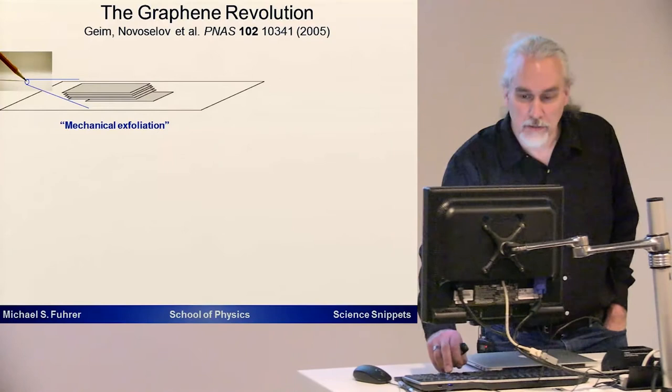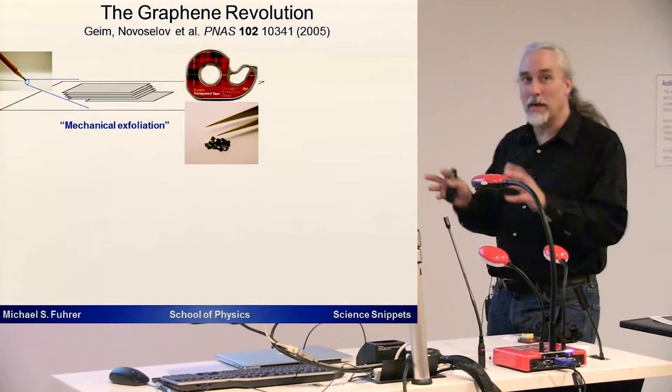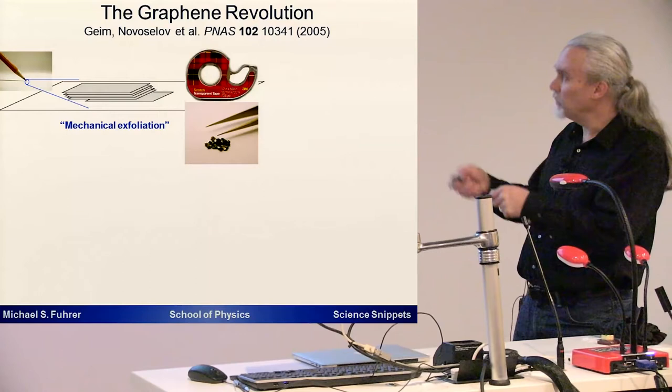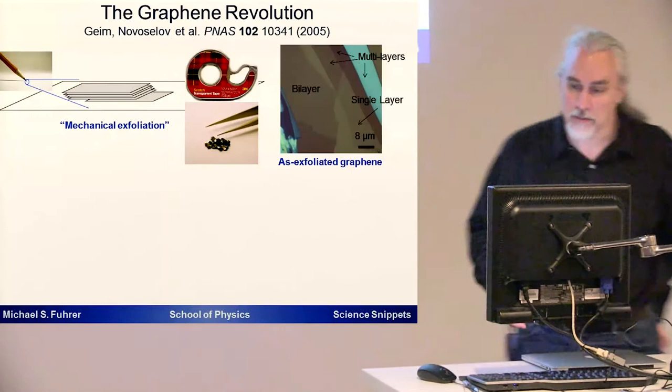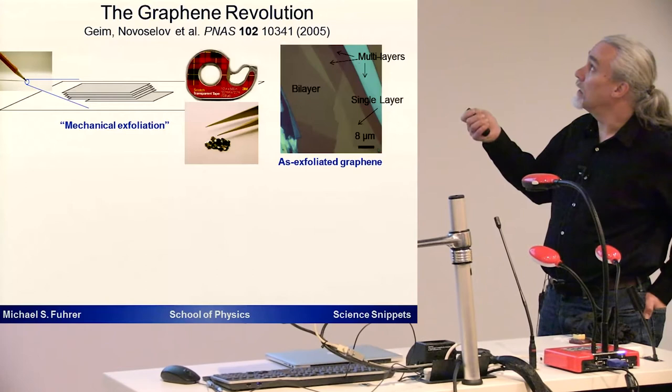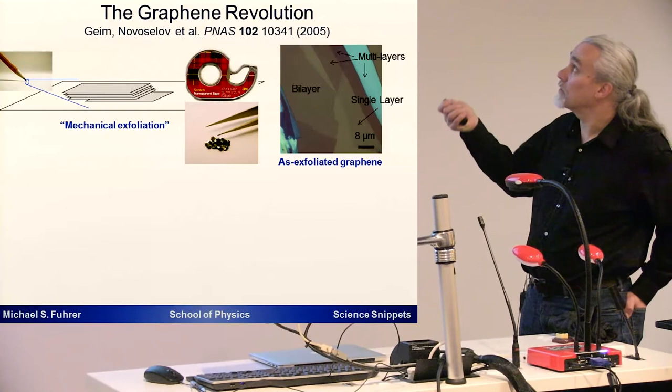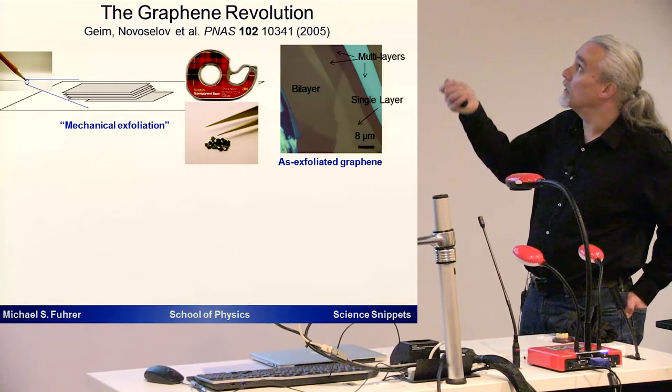This is what we call exfoliation. We can use much more sophisticated tools to do this, like scotch tape. We can get some nice crystals of graphite that are a little bit better quality than the lead in your pencil. If we take the scotch tape and peel these crystals apart many times and then take the debris that's left and smear it on a flat surface of silicon dioxide on silicon and put it under an optical microscope, we can see images like this. We can identify areas that are just one layer of carbon thick—this is a single layer of graphene.